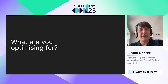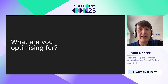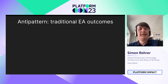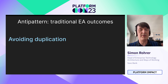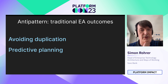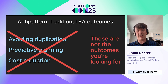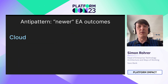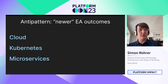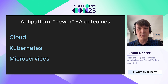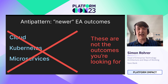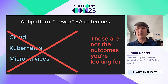A key question in the context of architecture is: what are you optimizing for? What are those trade-offs you're making? An anti-pattern we've seen is that enterprise architecture functions are optimizing for things like avoiding duplication, predictive planning, and reducing cost. Maybe some of these are good things, but they're not really the business outcomes you should be looking for. Some newer ones — things like cloud, going all the way to Kubernetes, or refactoring everything to microservices — are potentially good interim outputs, but they're not outcomes. They're not really business outcomes.